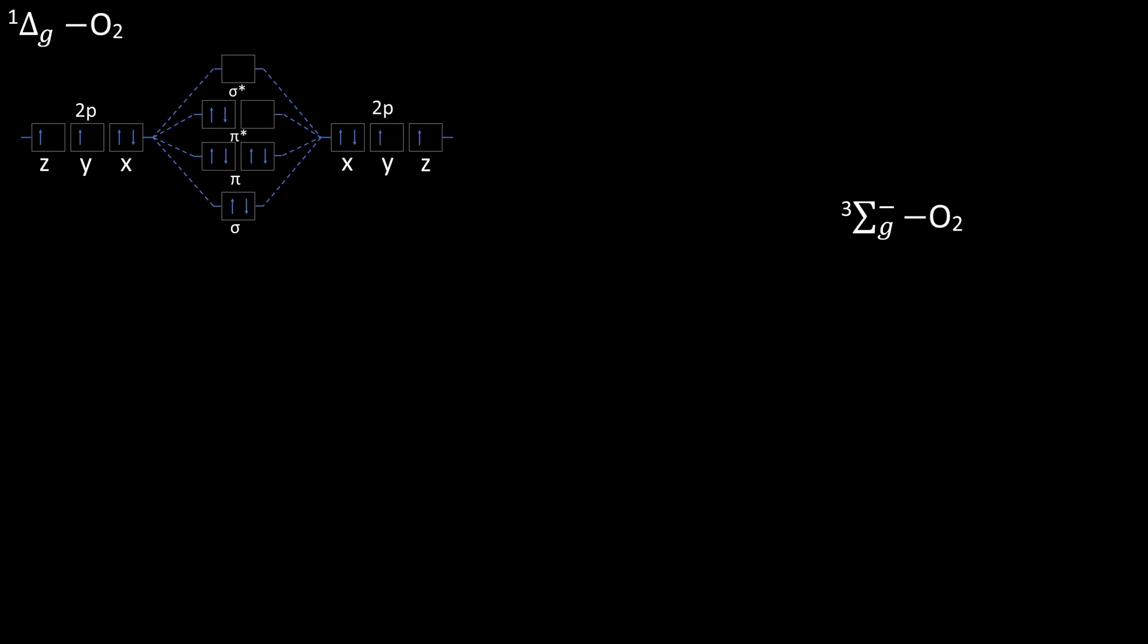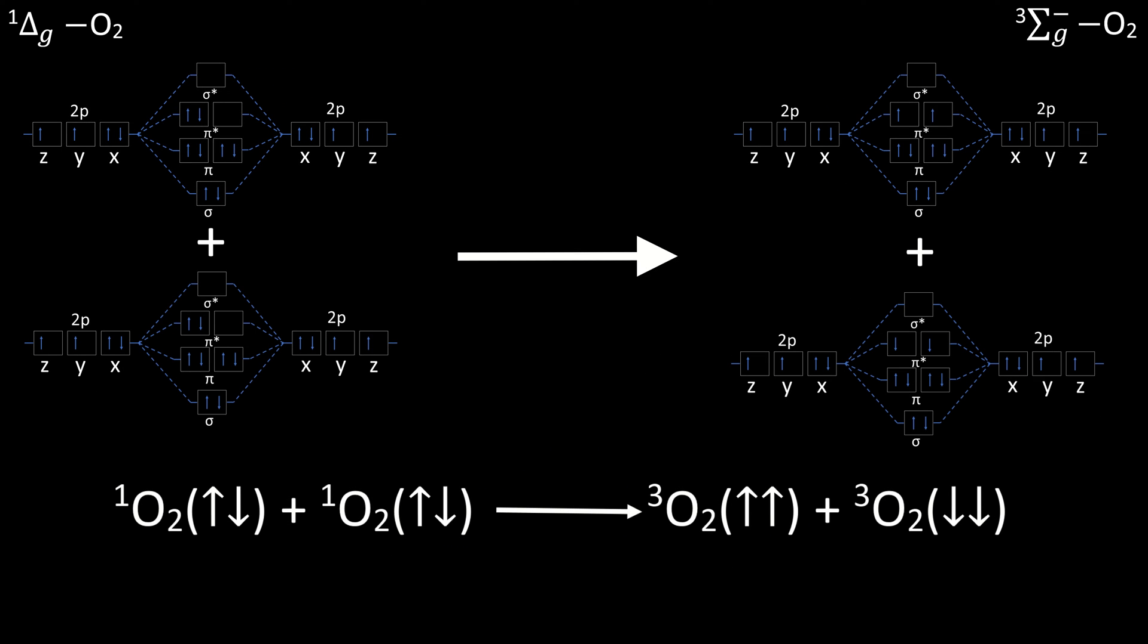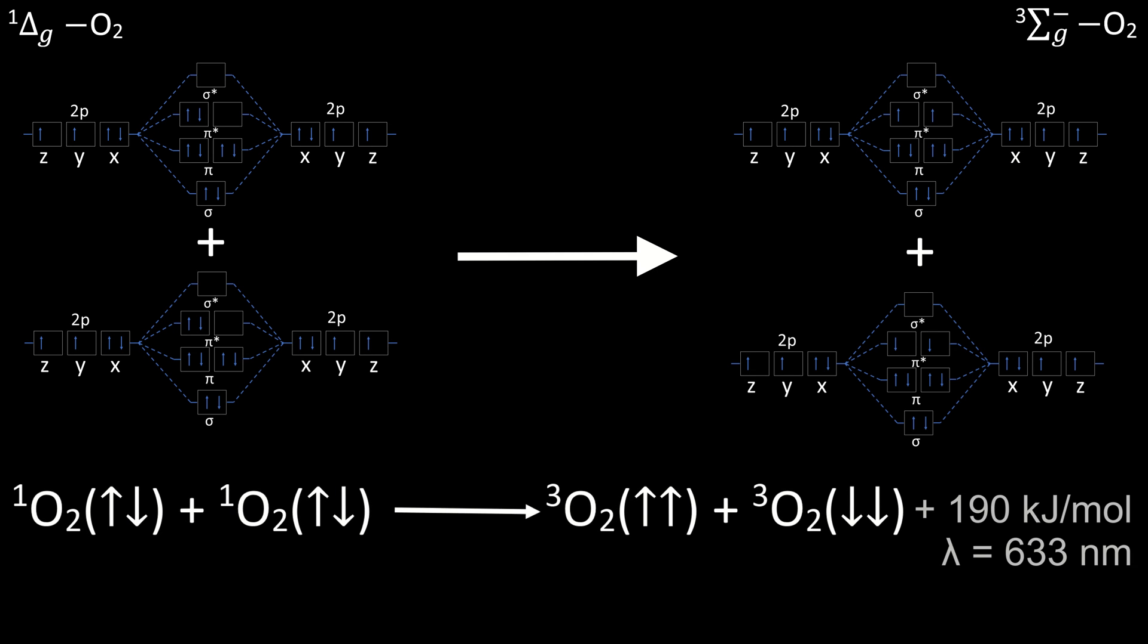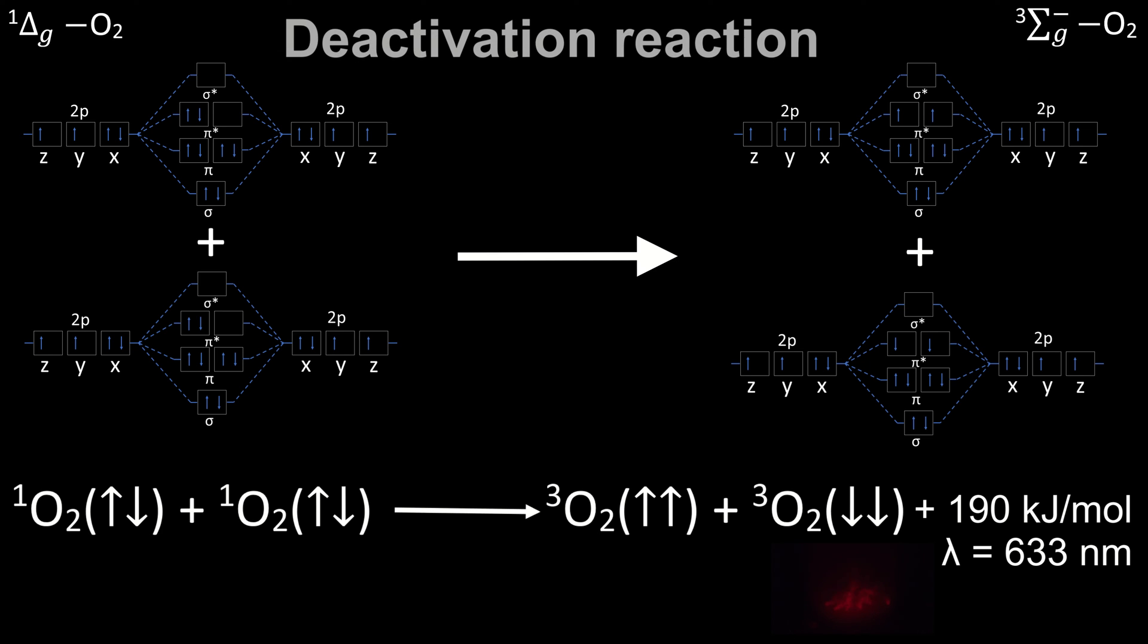Nevertheless, there is another transition of this exact state into the ground state. Electrons are exchanged between two singlet oxygen molecules without a change of spin, causing both molecules to be in the ground state afterwards. In this, 190 kJ per mole are released in the form of light with a wavelength of 633 nanometers, which is in the visible range. This is called a deactivation reaction.